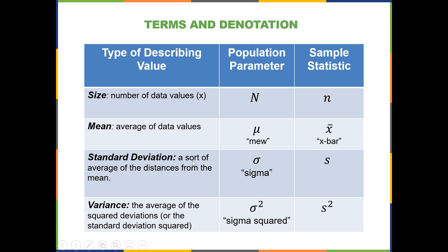We have standard deviation, denoted as sigma for the population. Looks like a little O with an extra little floof on it. And that is the lowercase sigma. The uppercase sigma is used to instruct adding a list of values. Then we have lowercase s for the sample standard deviation.